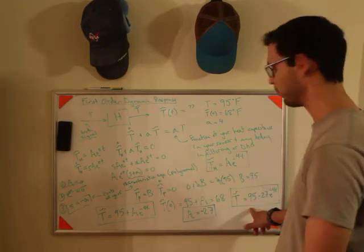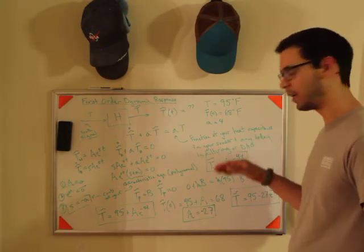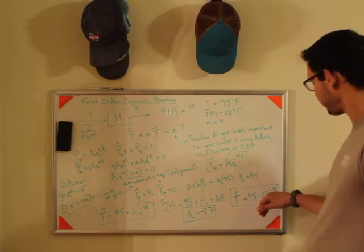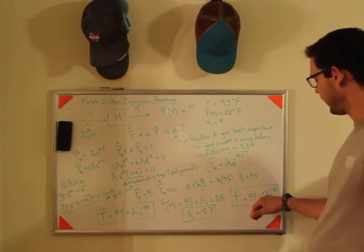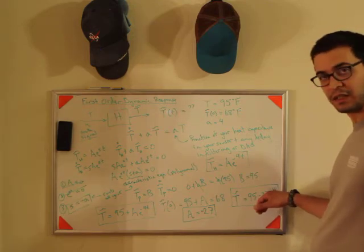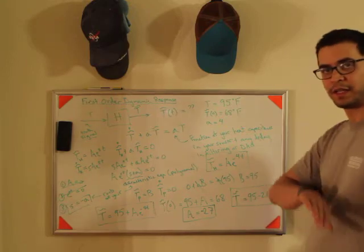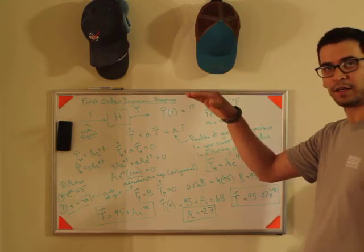And that you can plot on a graph, and you can get what t tilde looks as a function of time. And if you look at this, when t is zero, you get 95 minus 27, which is 68. But when t is infinity, this whole term goes to zero, and you just get 95. And so if you plot this, you're going to get that rollover curve there.